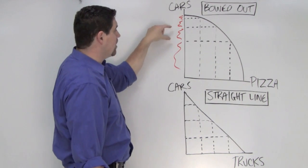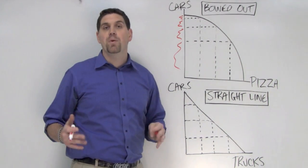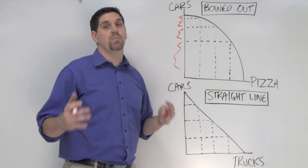Notice how it gets bigger, bigger, and bigger. That's the law of increasing opportunity cost. As you produce more of anything, the opportunity cost to produce it is going to get bigger and bigger.